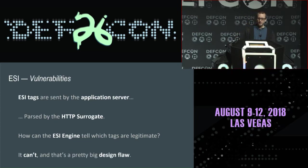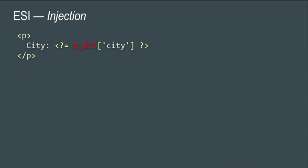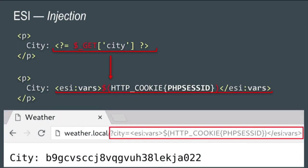There's a very important question we have to ask: how can the ESI engine know which tags are legitimate and which are injected by a malicious user? Think about cross-site scripting — it's basically the same thing, except we're not exploiting browsers. That's the problem: it can't. You're able to inject ESI tags and do basically whatever you want with the cache server. To illustrate this, let's look at a basic example of an ESI injection. The content of a city GET parameter is echoed back in the HTTP response, and the caching server is going to parse anything that is sent there.